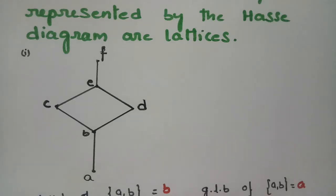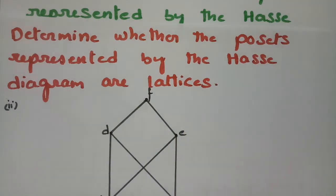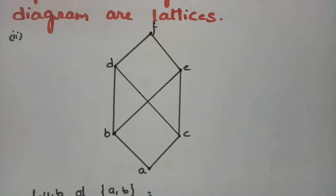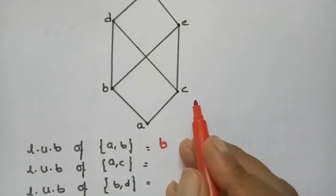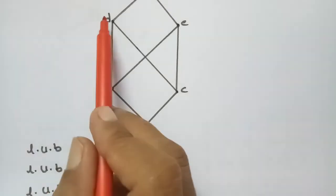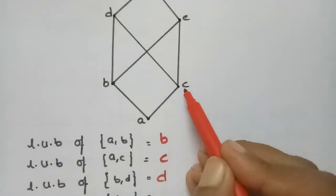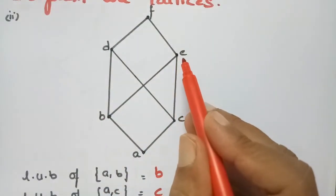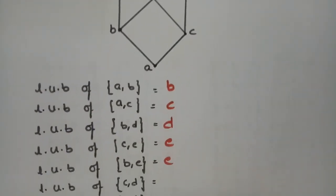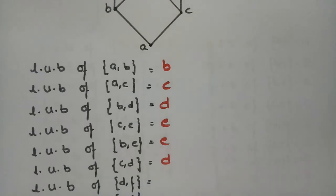Next, coming to the second figure: determine whether the poset represented by the Hasse diagram is a lattice. According to the Hasse diagram, I am going to check the upper bounds. For (a, b) the upper bound is b; for (a, c) the upper bound is c; for (b, d) the upper bound is d; for (c, e) the upper bound is e; for (b, e) the upper bound is e; for (c, d) the upper bound is d.